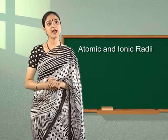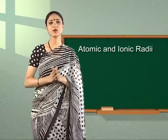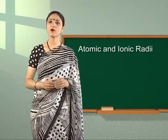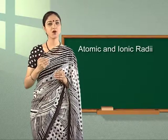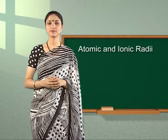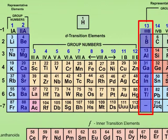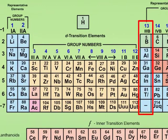Atomic and ionic radii of group 13 elements are smaller than that of group 2 elements. While moving from group 2 to group 13 in the same period, nuclear charge increases and new electrons enter into the same shell. Electrons in the same shell have very little screening effect. Thus, effective nuclear charge increases and the size of the atom decreases.